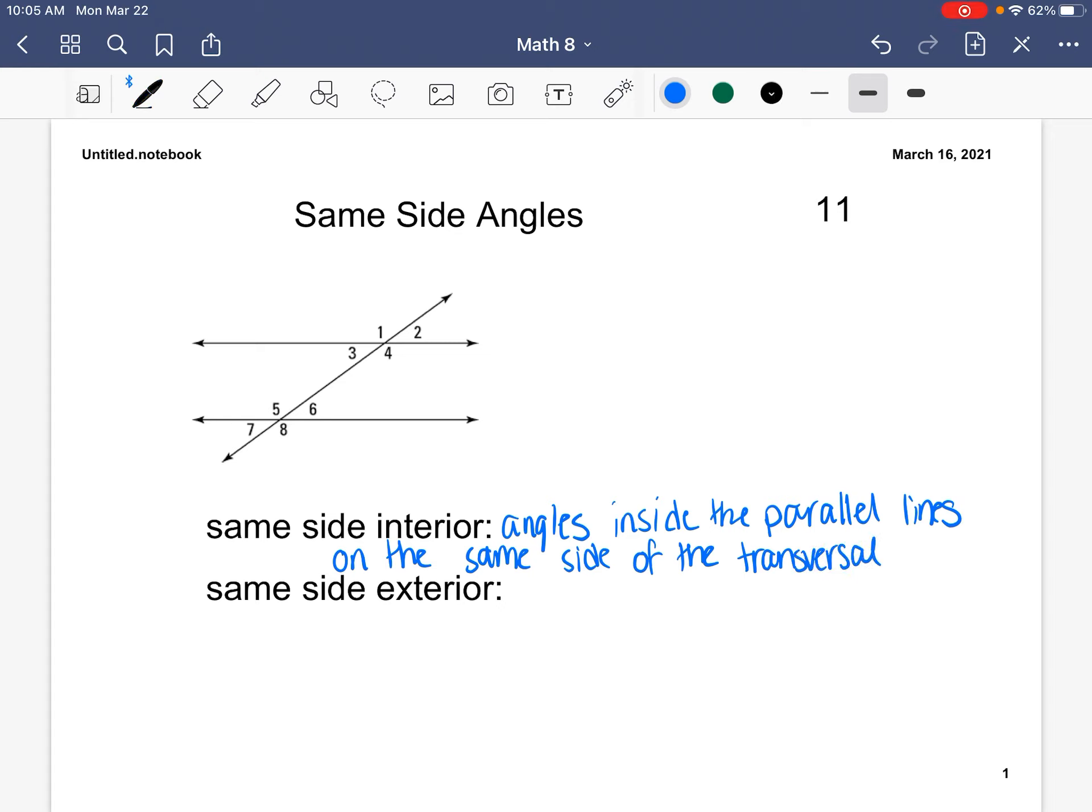So just to review some vocab, these right here are our parallel lines. And then this line right here is called our transversal. Same side interior angles are the ones that are inside the parallel lines and they are on the same side of the transversal.